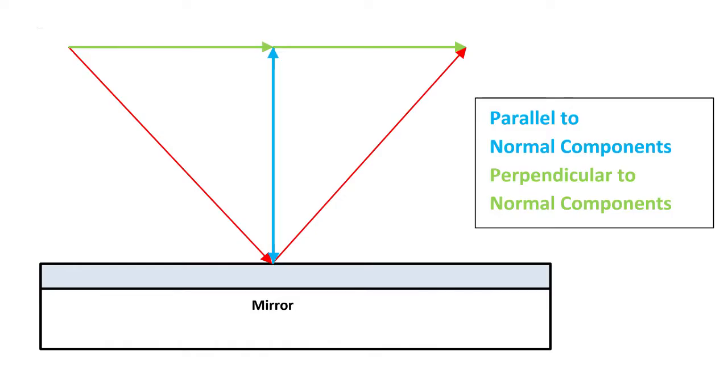We can think of an incoming ray as a vector, having a component that is parallel to the normal and a component that is perpendicular to the normal. When the ray is reflected, the perpendicular component is unchanged and the parallel component is flipped 180 degrees in the opposite direction.